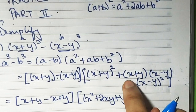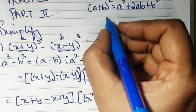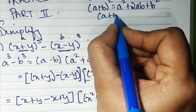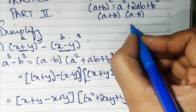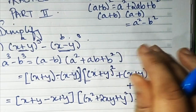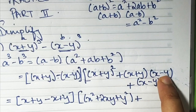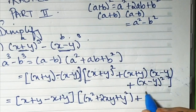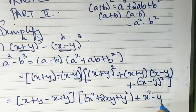Plus (x + y)(x − y). Remember the formula: a plus b times a minus b equals a square minus b square. So (x + y)(x − y) is x square minus y square.